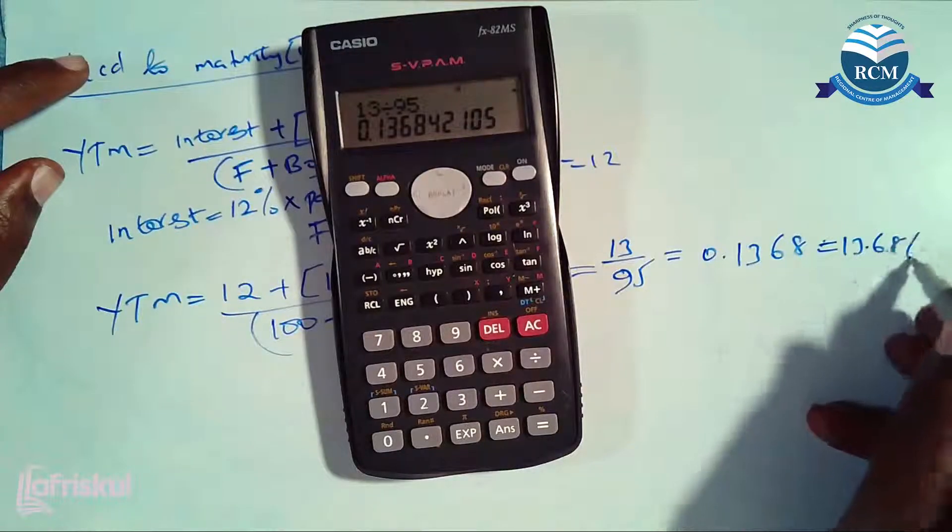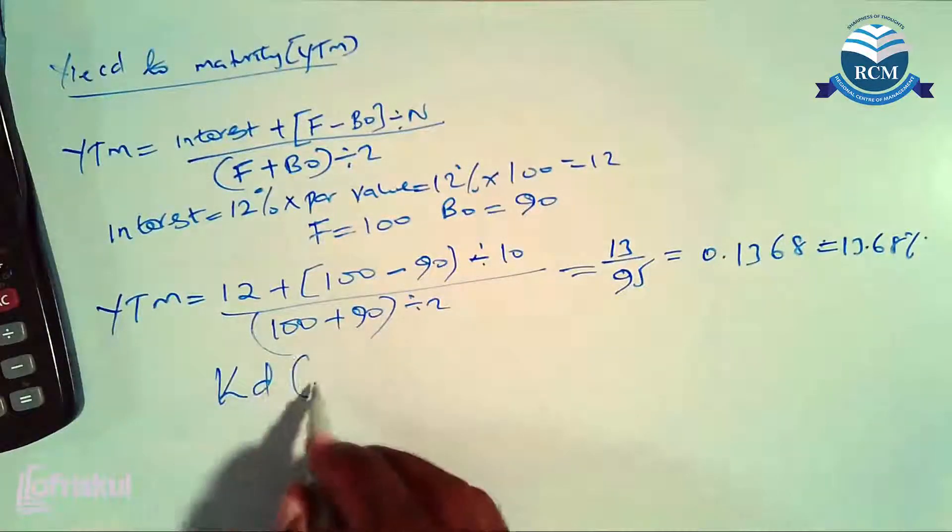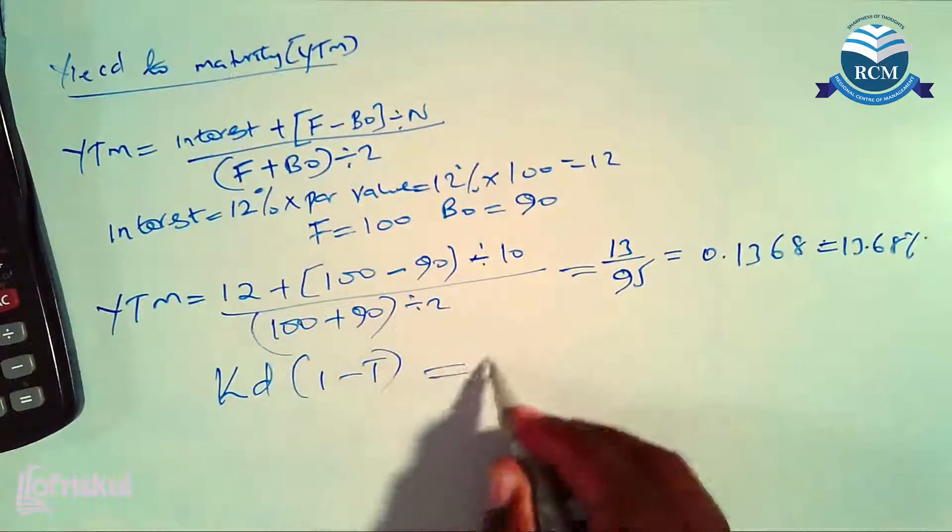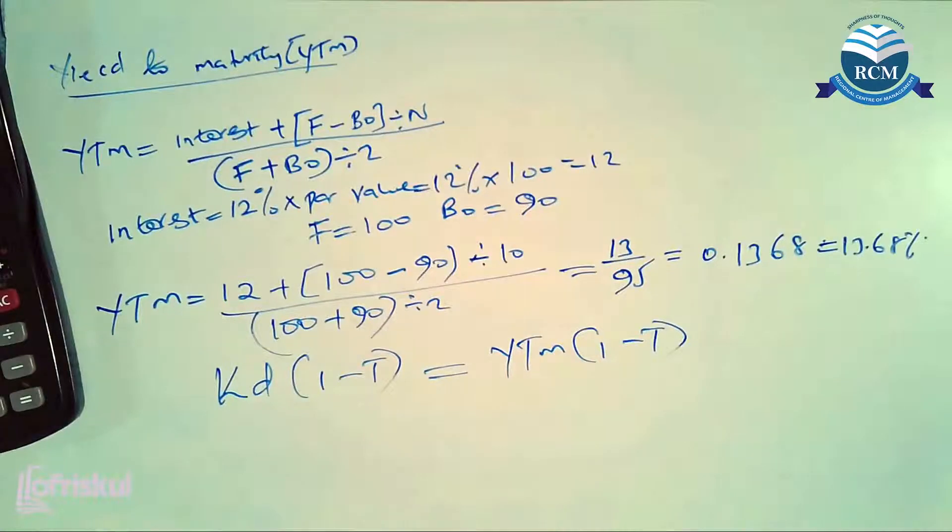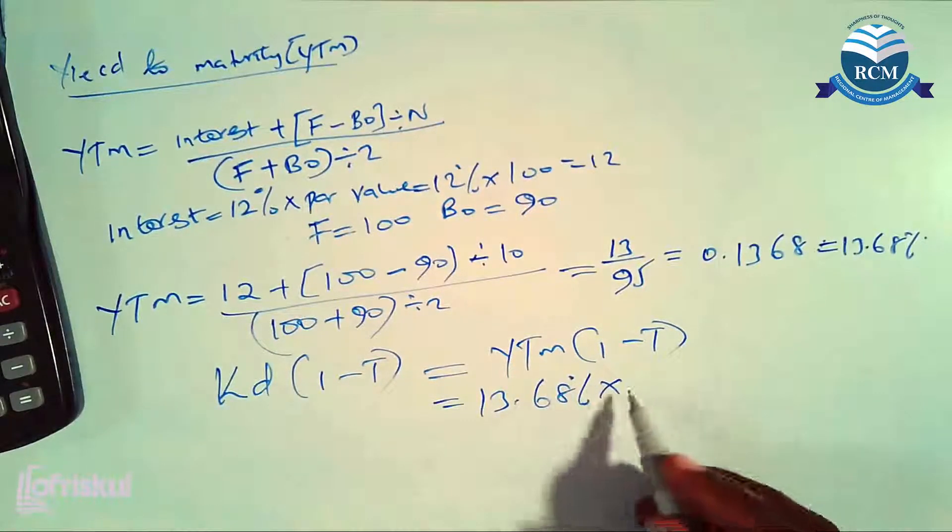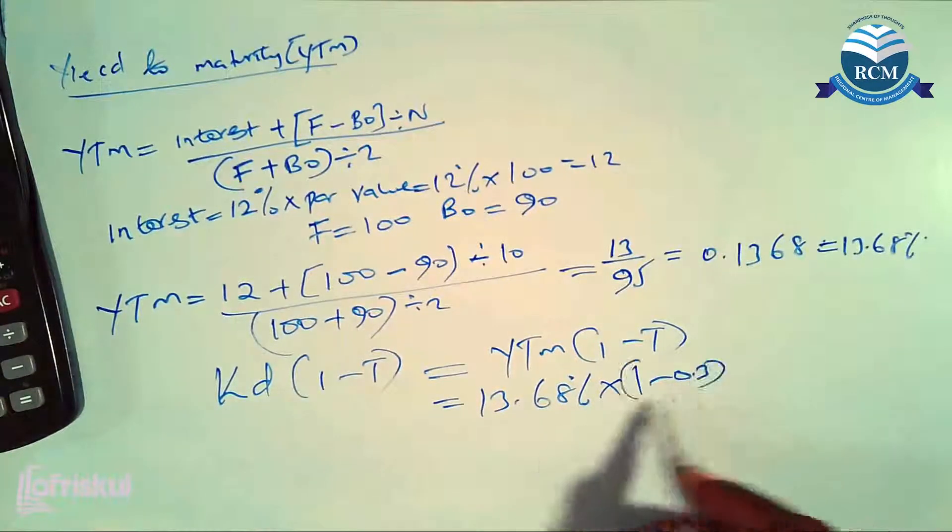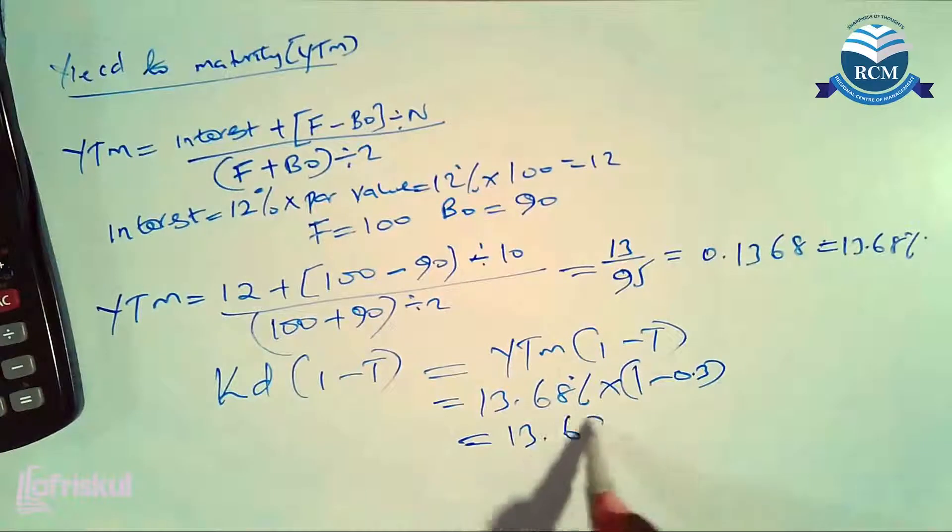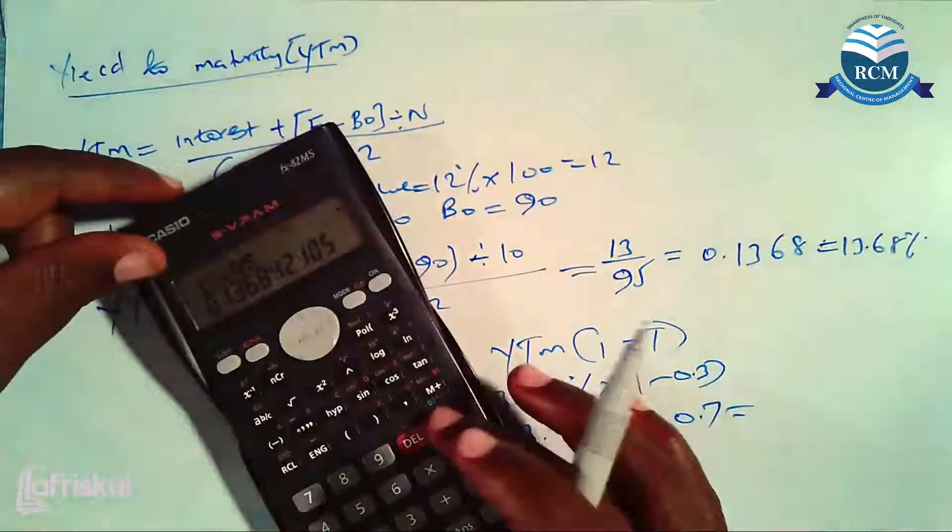After you get yield to maturity, our cost of debt after tax will be equal to yield to maturity adjusted for tax purposes. So yield to maturity is 13.68 percent times—the tax rate has been given as 30 percent—so 1 minus 0.3.